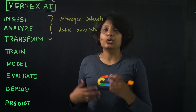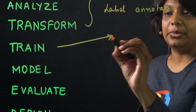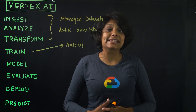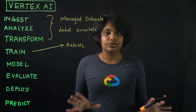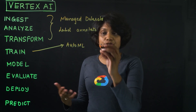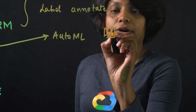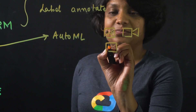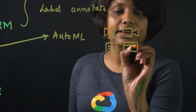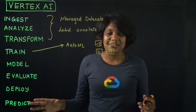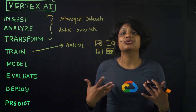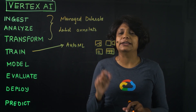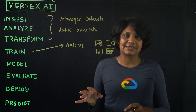For model training, you have two options: AutoML or custom. With varying machine learning expertise on the team, for some use cases such as images or videos, text files, and tabular data, AutoML works great. With AutoML, you don't need to write any of the model code — Vertex AI will take care of finding the best model for that task.